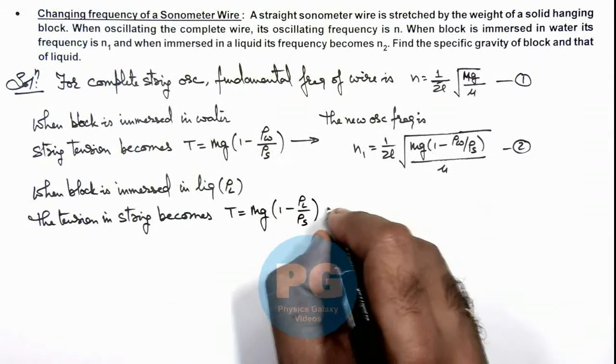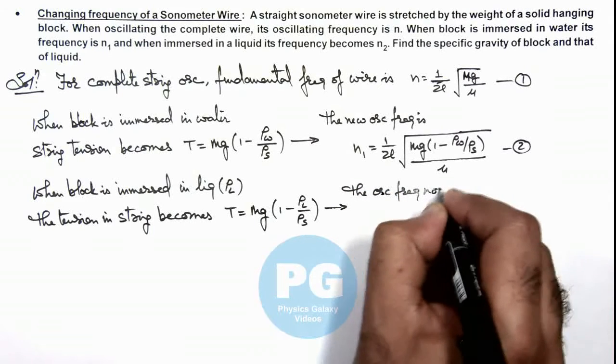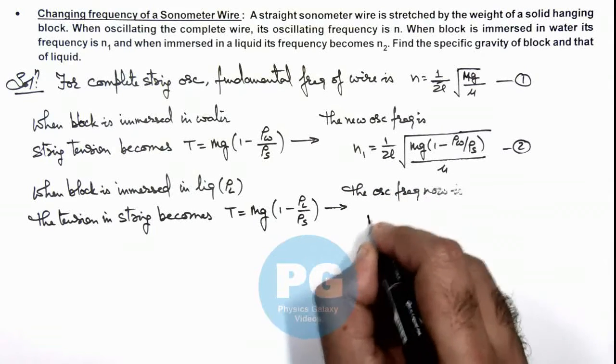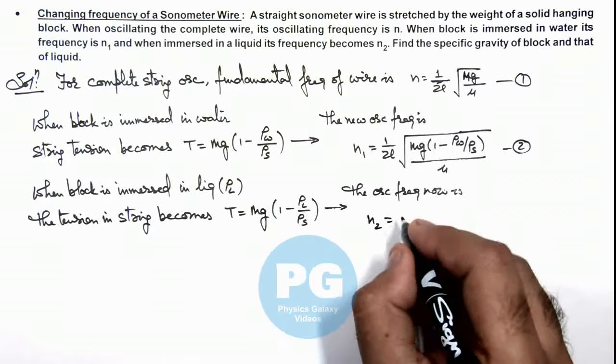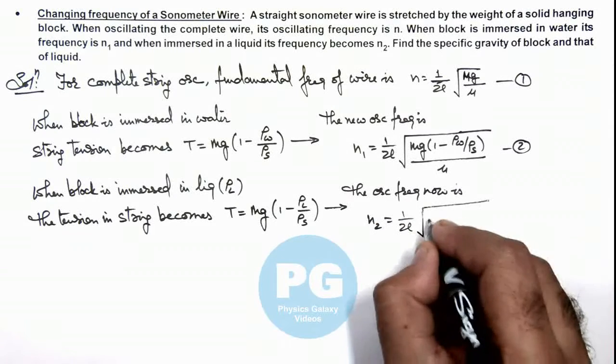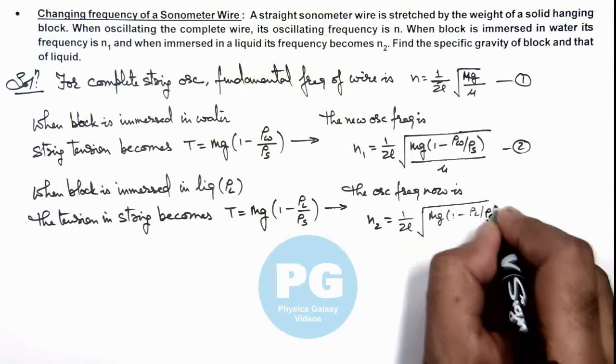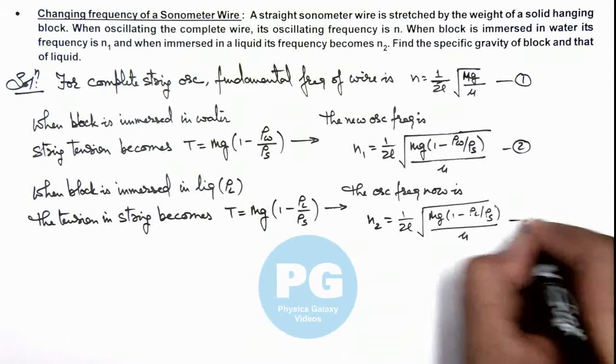So the oscillation frequency now changes to n₂, which we write as (1/2l)√[mg(1 - ρ_l/ρ_s)/μ]. This is equation 3.